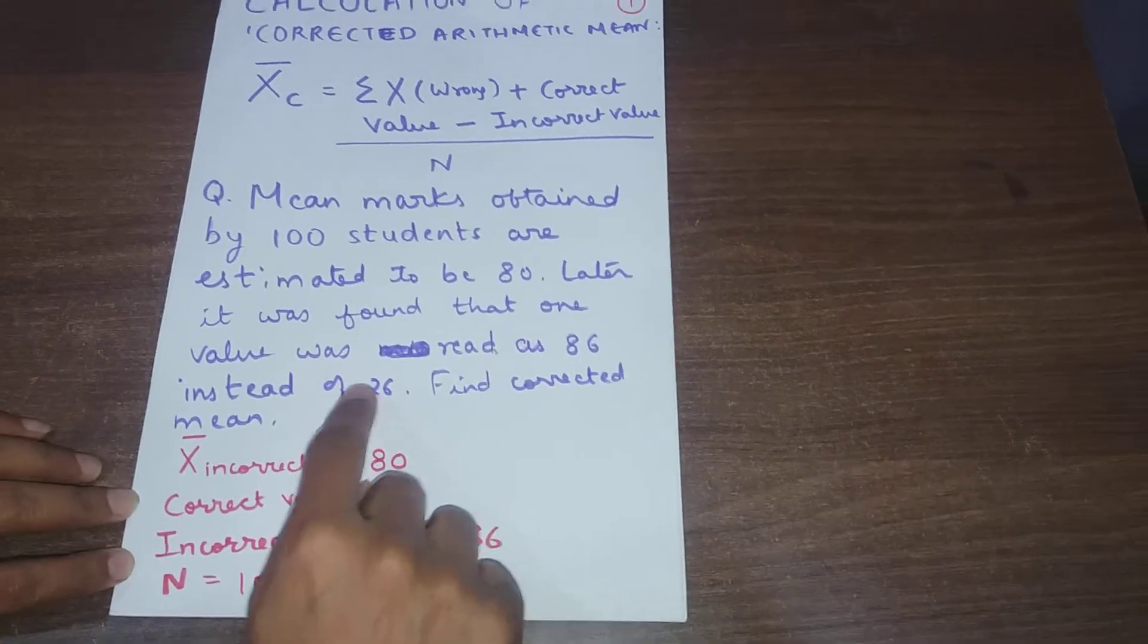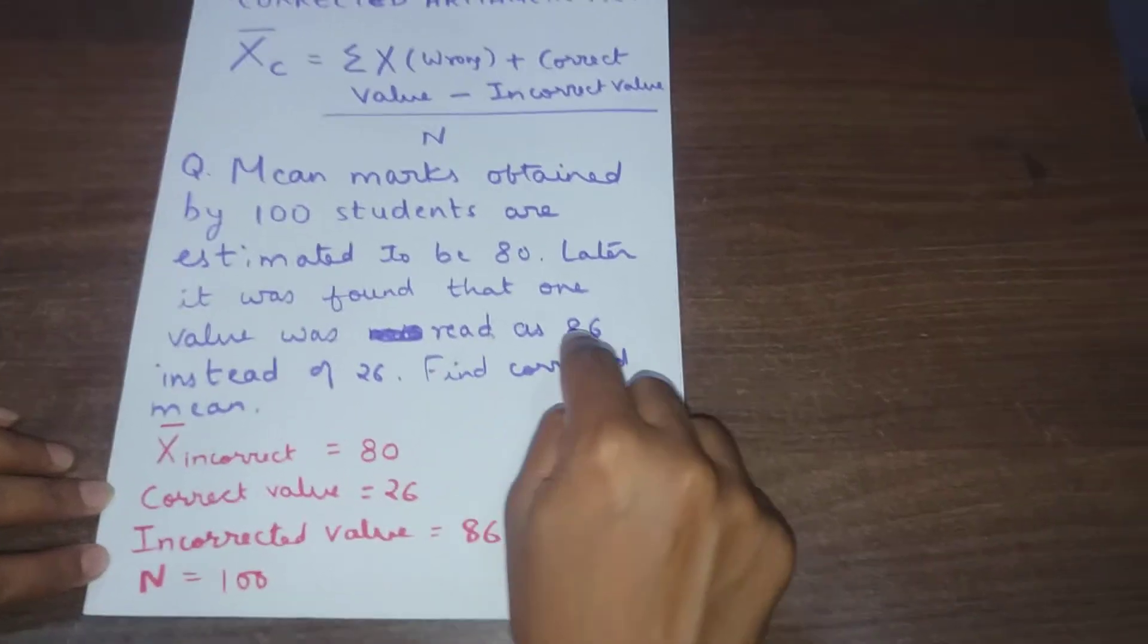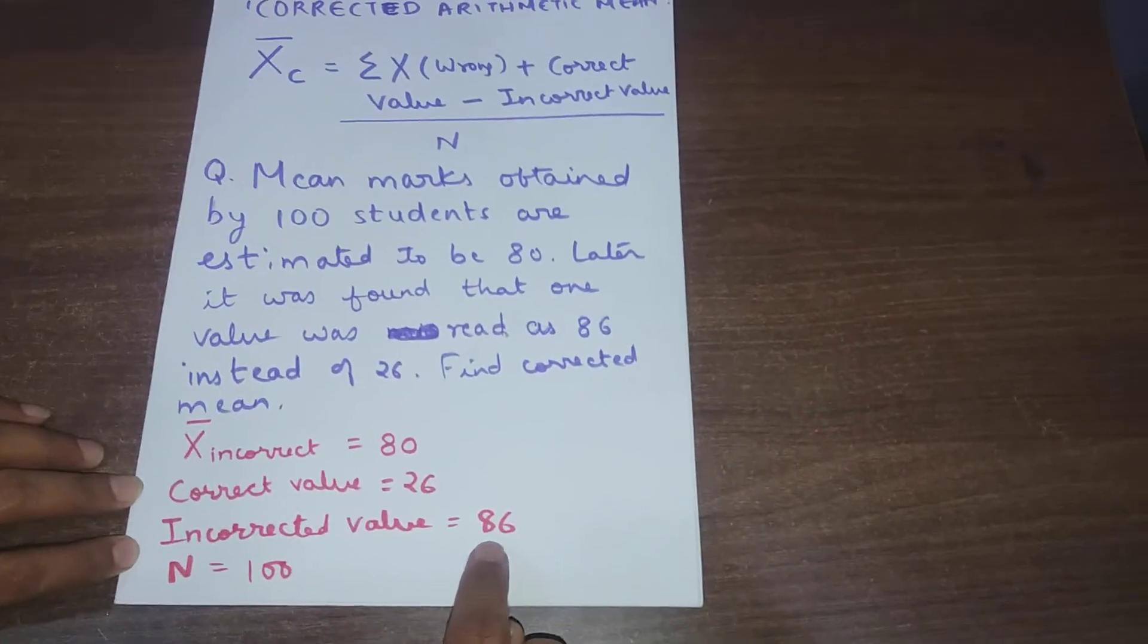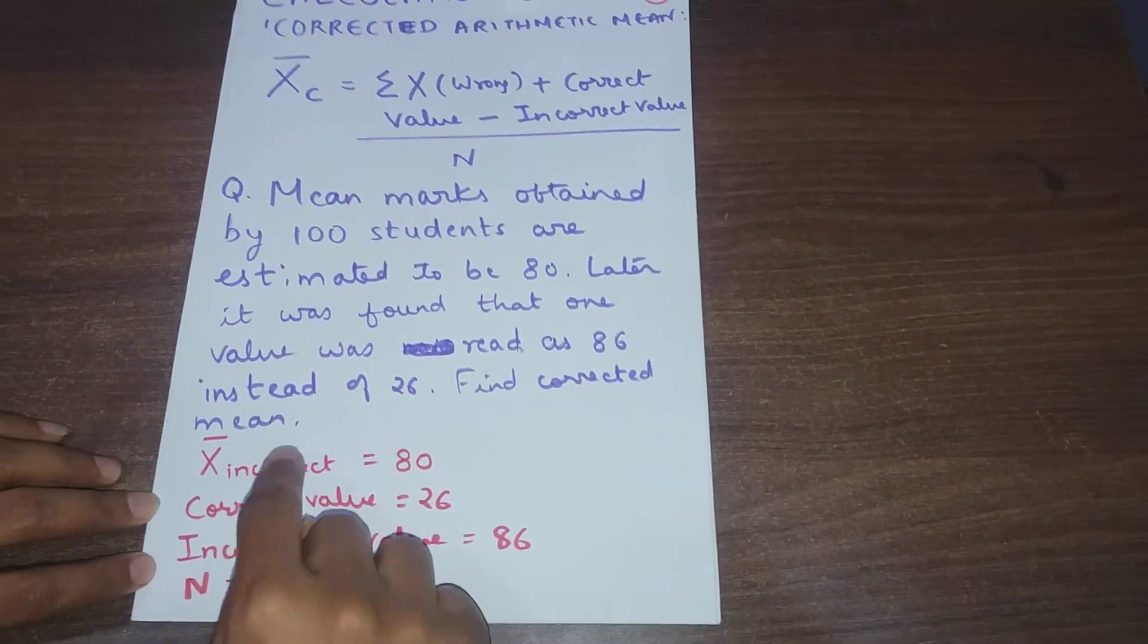So actually, correct value is 26 and incorrect value is 86. We will find corrected mean now with the help of these four things.